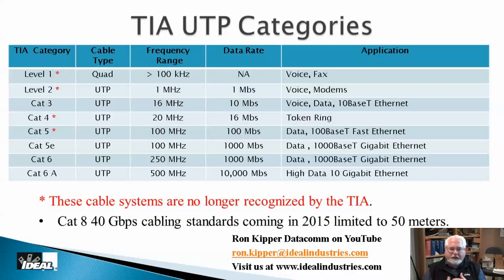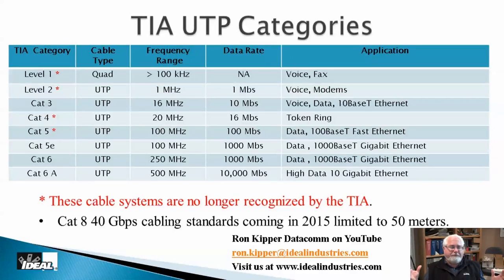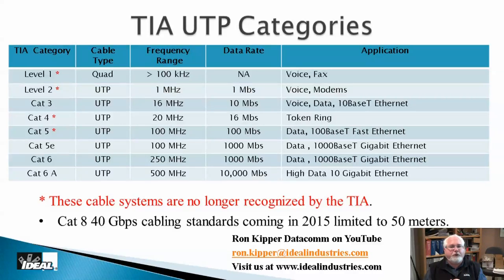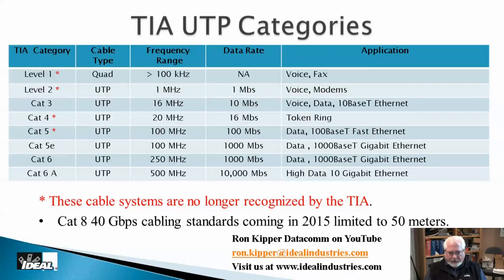When 10 gigabit Ethernet emerged, Cat 6 could potentially support it but probably not reliably to 100 meters. So Cat 6a was developed — ratified just a couple of years ago — rated for 500 megahertz, twice what Cat 6 supports, and designed to carry 10GBaseT data networks at 10,000 megabits per second. Cat 7 exists in Europe with similar specs to Cat 6a.